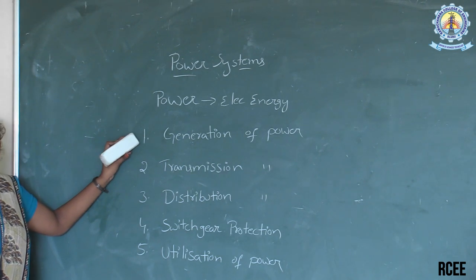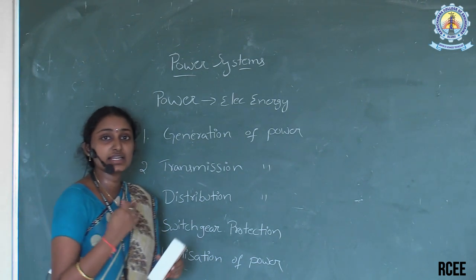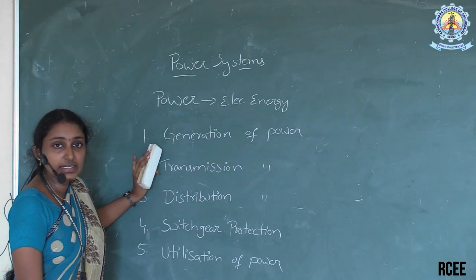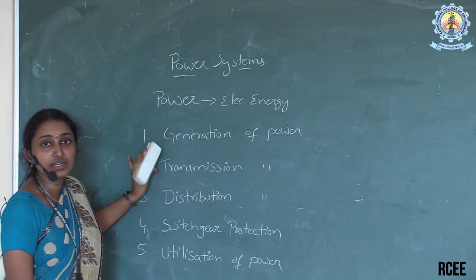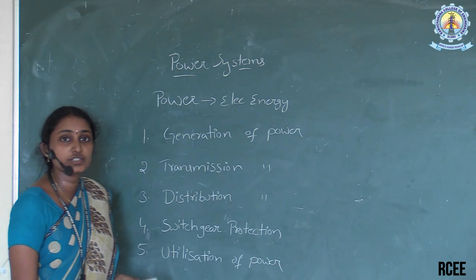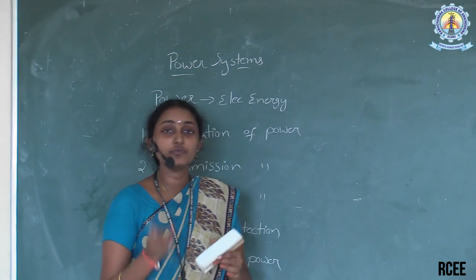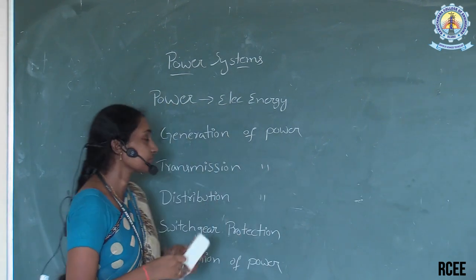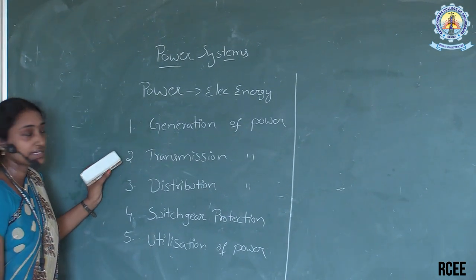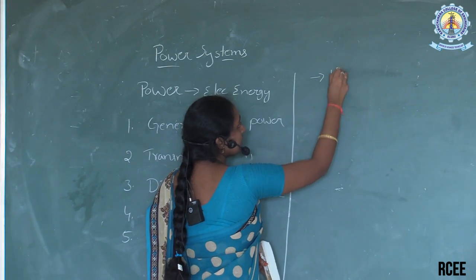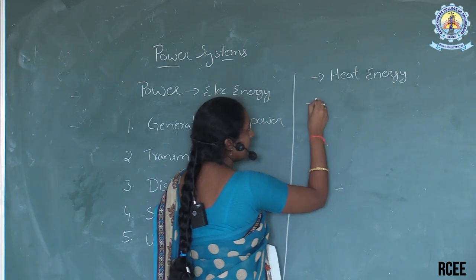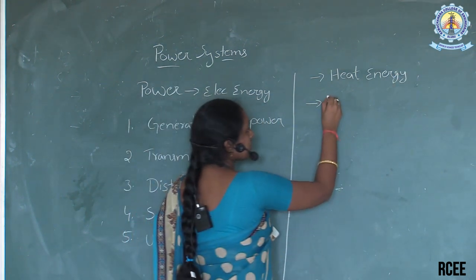If you want to generate the power, how many types of energy can we convert into power? We can't create any energy. From the law of conservation of energy, we know that energy is neither created nor destroyed. It can only be transferred from one form into another. So some energies are converted into electrical energy — for example, heat energy can be converted into electrical energy, and nuclear energy can also be converted into electrical energy.